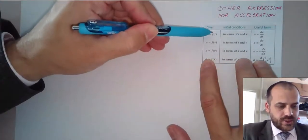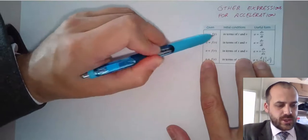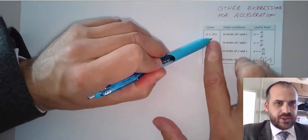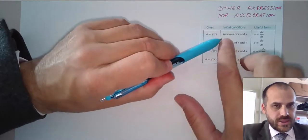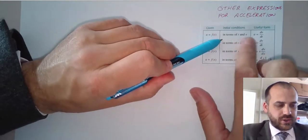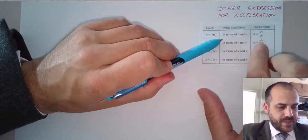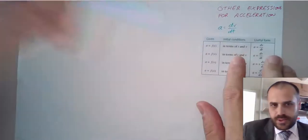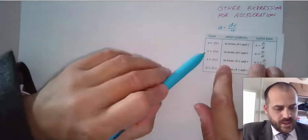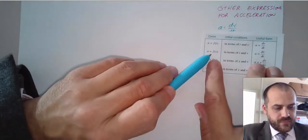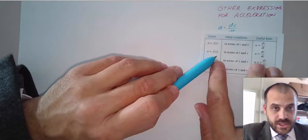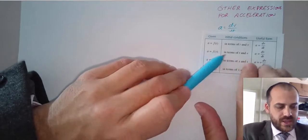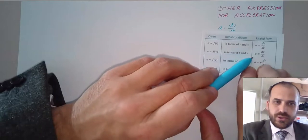Here's a nice summary. Acceleration is equal to a function of time — that's the one you're most used to. If you're given acceleration as some function of time and you're told the initial condition, the velocity at some time, then using that first formula is your best way to go. If you're given acceleration as some function of velocity and your initial conditions are in terms of t and v, then using this formula is also a great way to go.